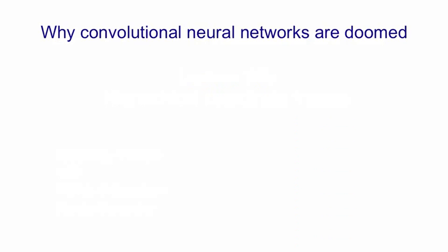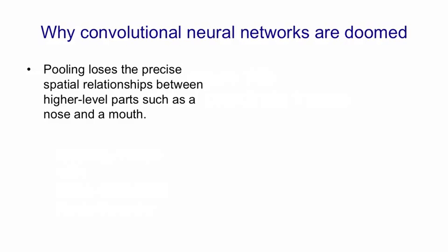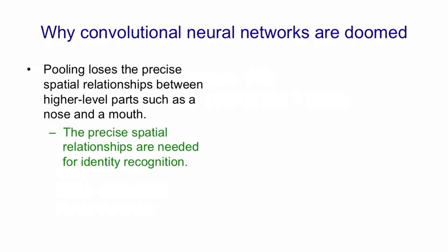Even though convolutional neural networks have worked very well for recognising objects in images, I think there's something missing. When we pool the activities of a bunch of replicated feature detectors, we lose the precise position of the feature detector that was most active. This means we don't know exactly where things are, and that's fatal for high-level parts such as a nose and a mouth. In order to recognise whose face it is, you need to use the precise spatial relationships between high-level parts like noses and mouths.